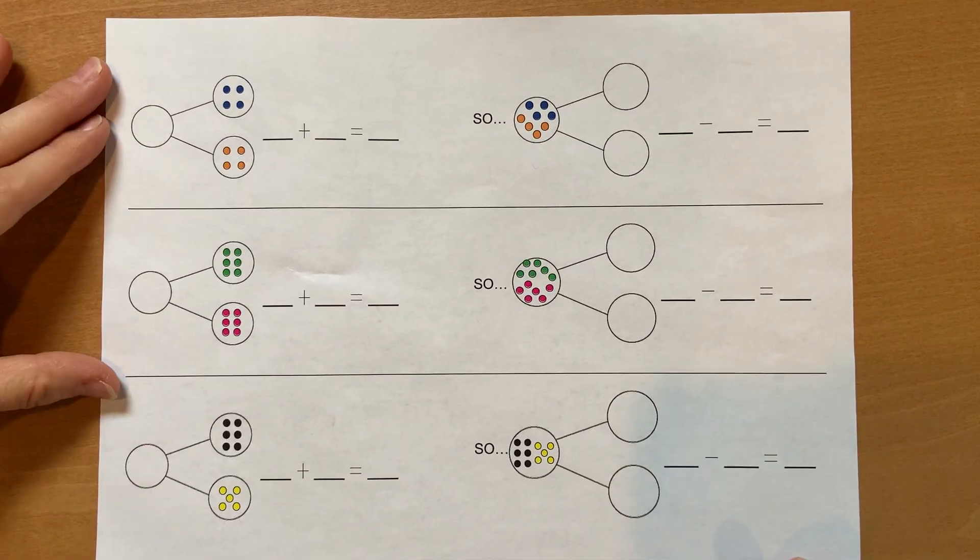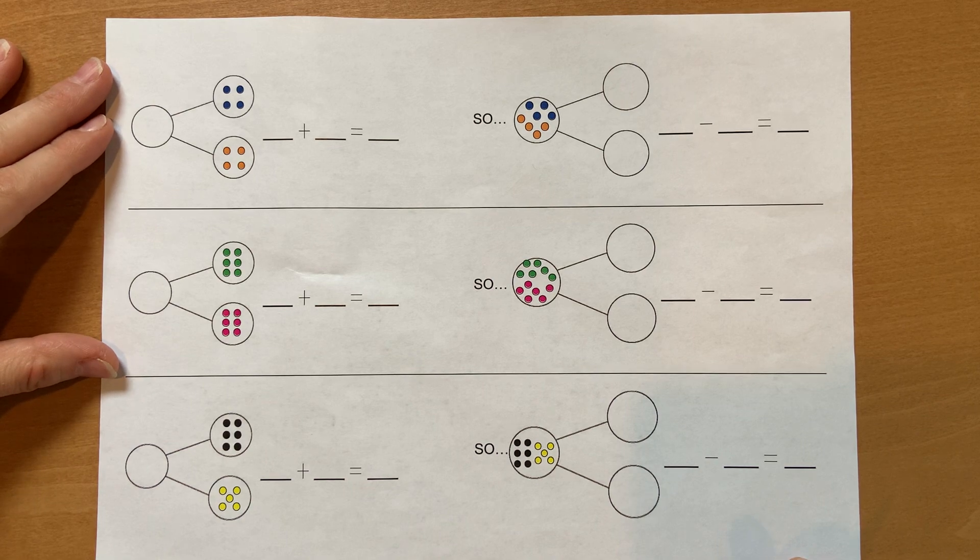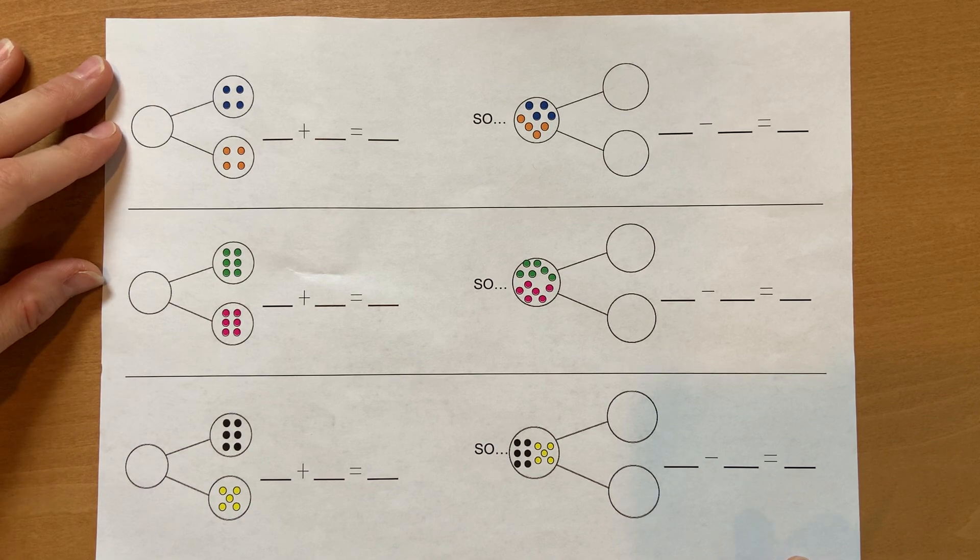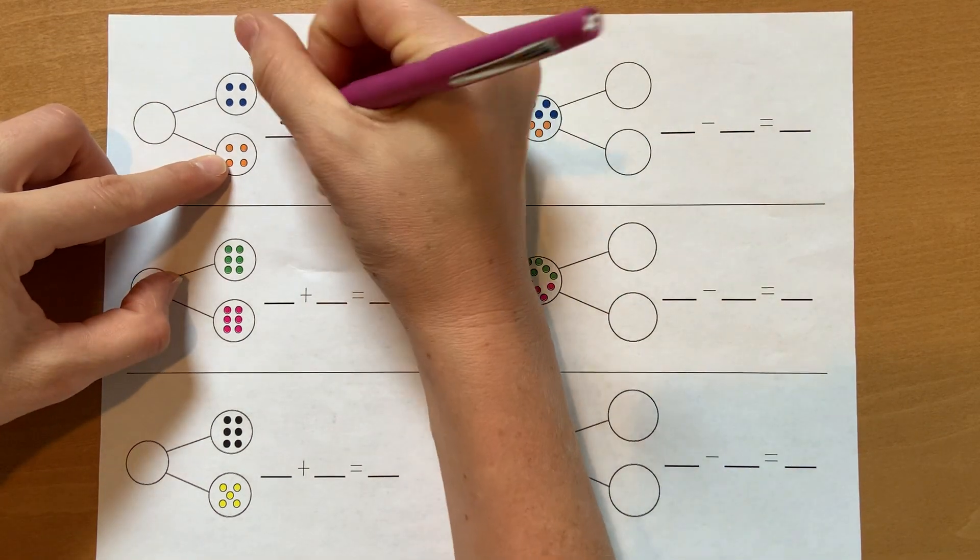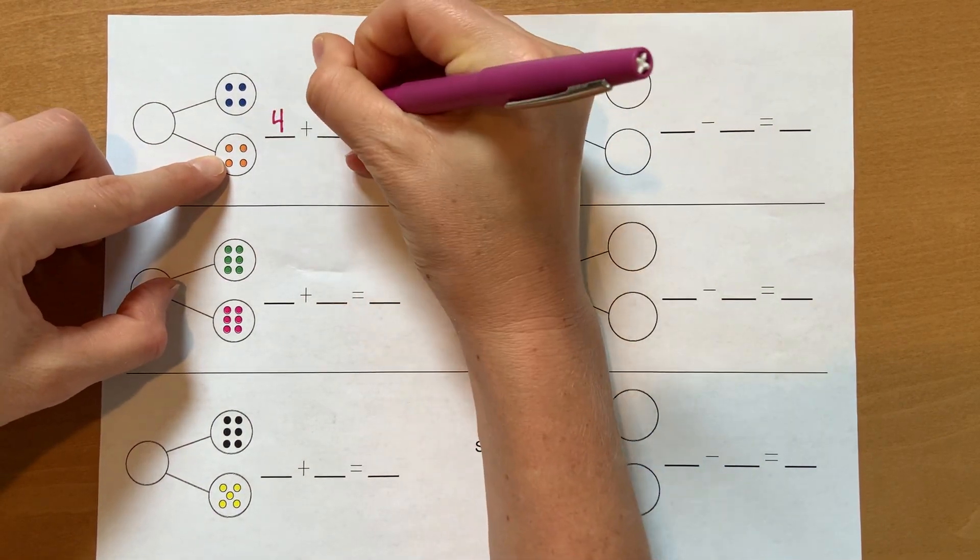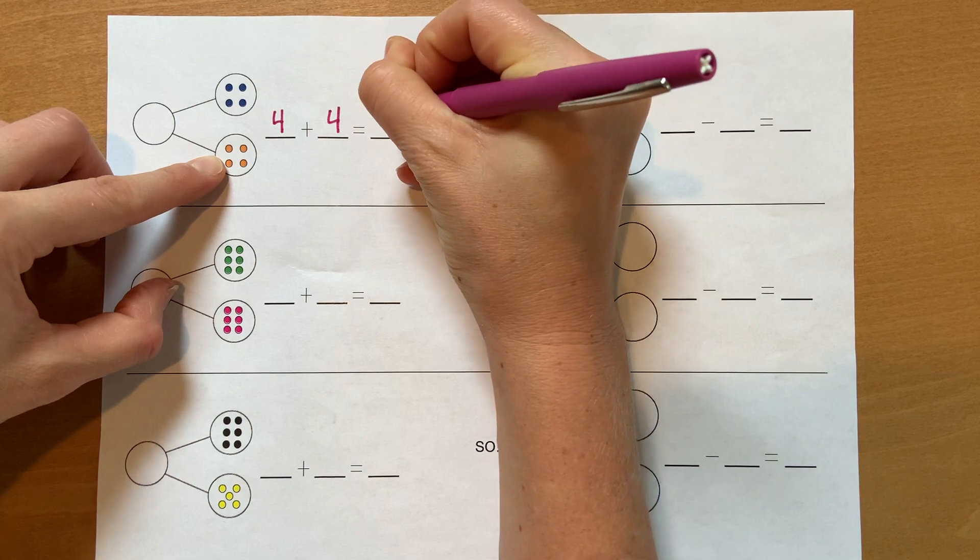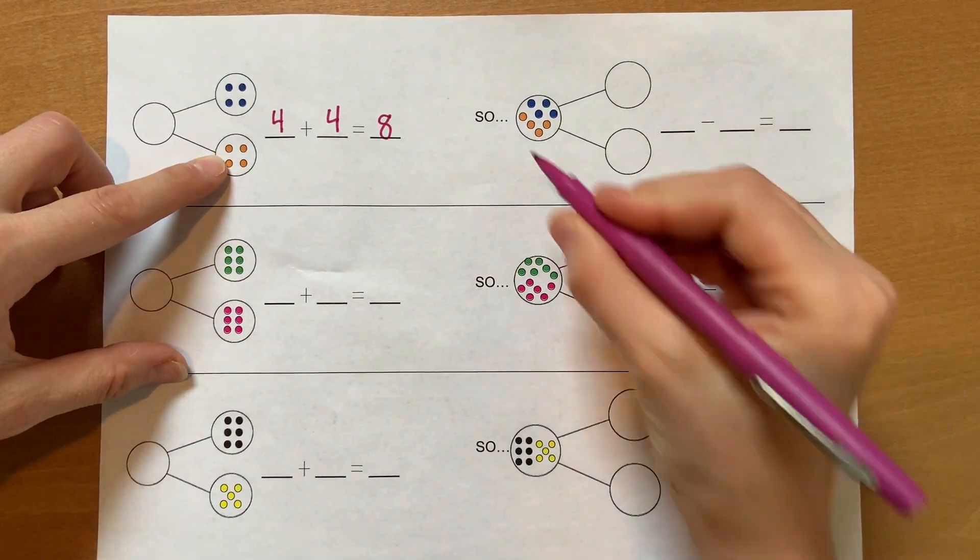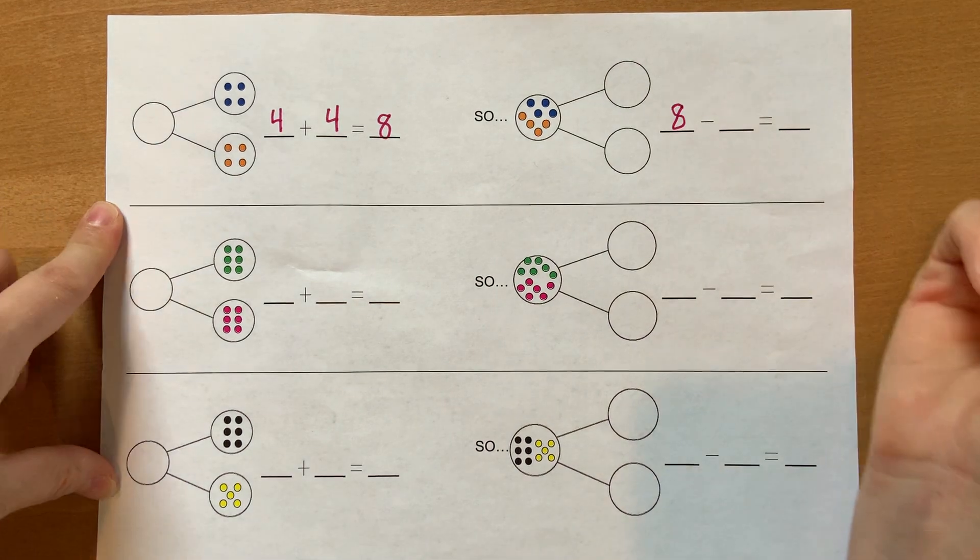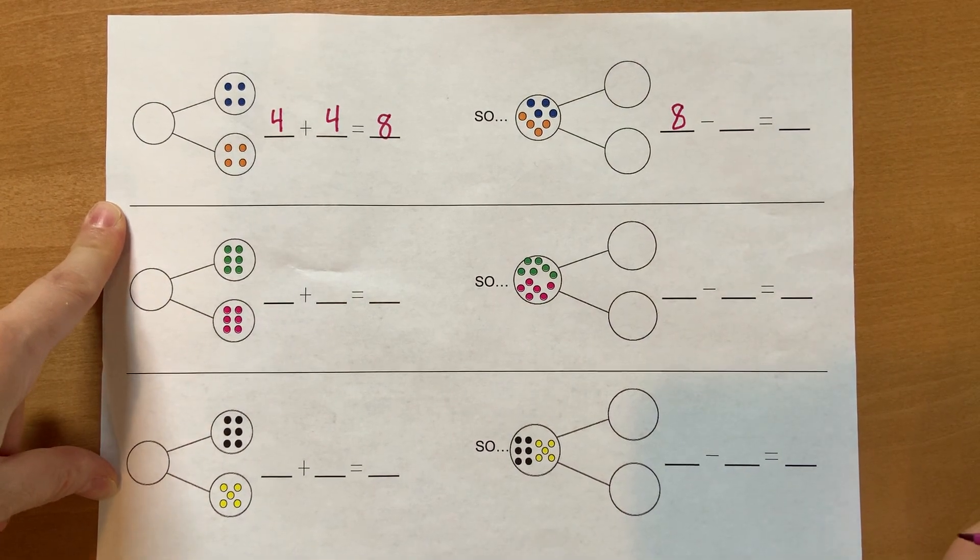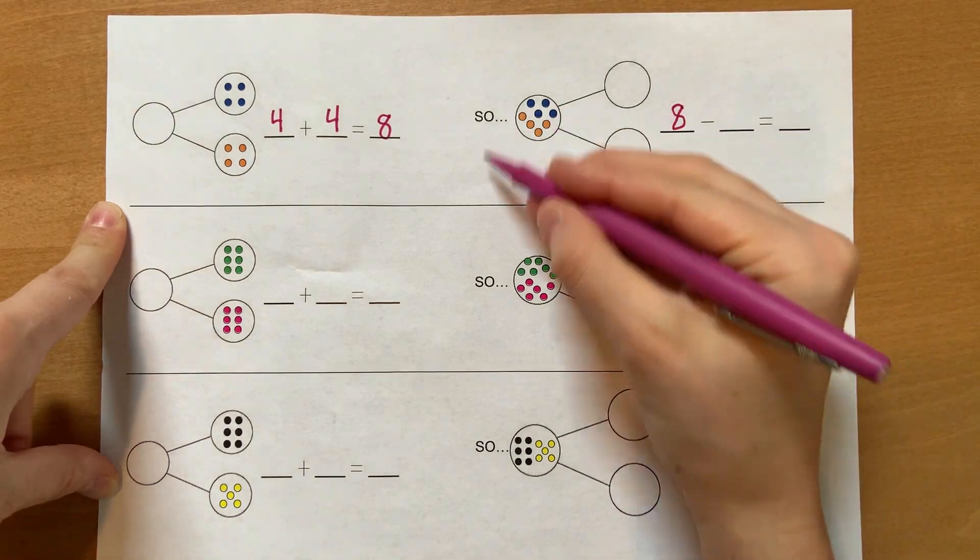A couple more to practice addition, helping us with subtraction. Here, I have four and four. I'm going to write those down. That's a double. That's so easy, isn't it? But you know what? I've noticed a lot of kids get scared, and you don't have to. Say, I've got this. See, I can do it.